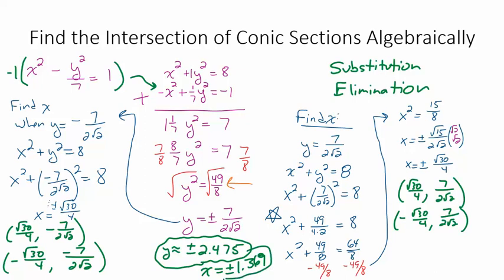Okay, so kind of a shortcut way to write all this. Out of space here. Let's write it up at the top. A shortcut way to write these four intersection points would be to write plus or minus 1.369 comma plus or minus 2.475. And you have to realize this is four points. Positive, positive, positive, negative, negative, positive, negative, negative. The four points that I've written out here.